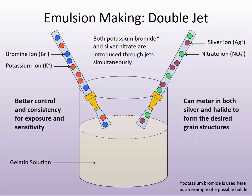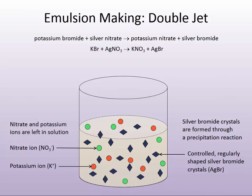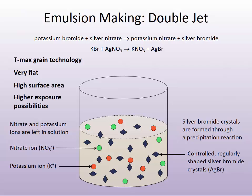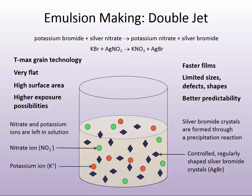Double jet is much more controlled. You could meter in both the silver and the halide to form just the grain you want at just the right size. In double jet there were few dislocations and very uniform size. With the two jets opposed to one another, you would get the T-Max grain type technology that Kodak had — very flat. That flat structure allowed for very high surface area, meaning much higher exposure characteristics. This is where the films got faster because of this technology. And with a much more limited distribution in sizes, defects, and shapes, the predictability for exposure and development was much better with these latter materials than those used in the early part of the 20th century.